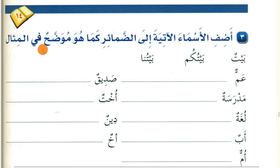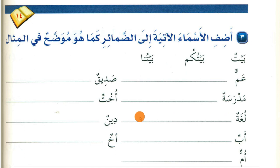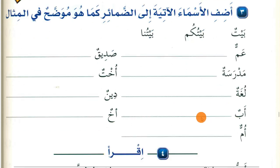Examples: 'Baytun' becomes 'baytukum' (your house) or 'baytuna' (our house). 'Ammun' becomes 'ammukum' (your uncle) or 'ammuna' (our uncle). 'Madrasatun' becomes 'madrasatukum' (your school) or 'madrasatuna' (our school). 'Lughatun' becomes 'lughatukum' (your language) or 'lughatuna' (our language).